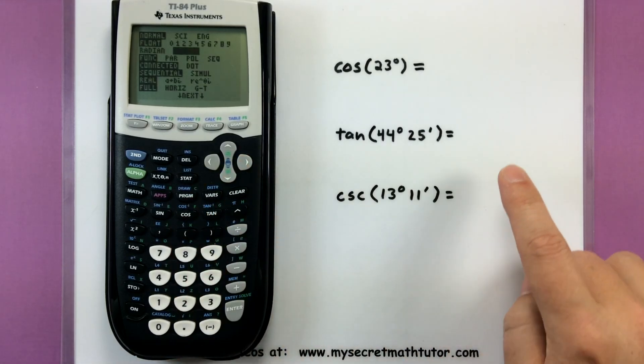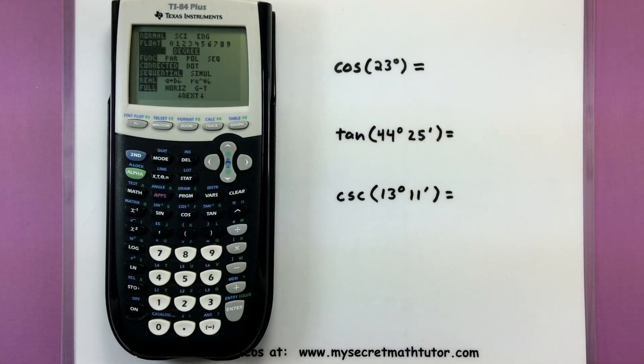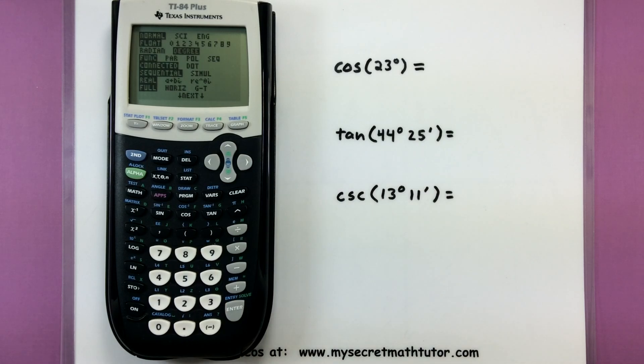For the examples that I'll be working on, I'll be using degrees, but later on in trigonometry you'll see me maybe switch back and forth between degrees and radians, so it's always a good idea to check to see what your angle is written in. Let's go ahead and keep it in degrees. I'll press second quit to get back to my home screen.